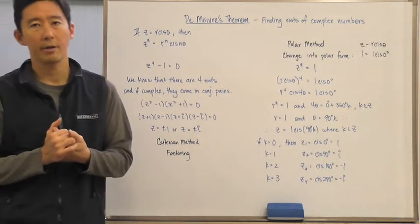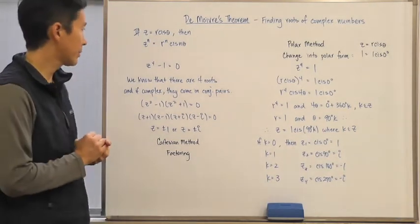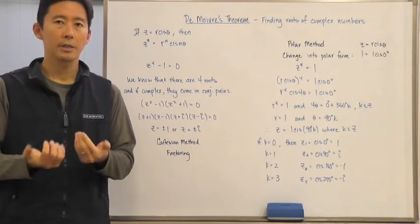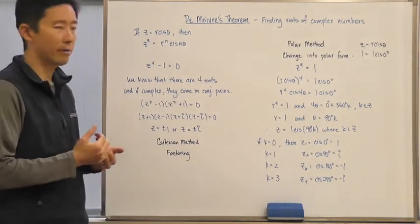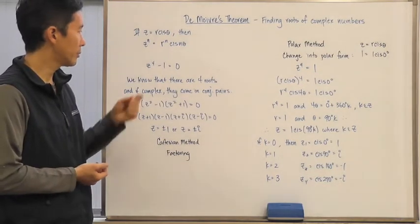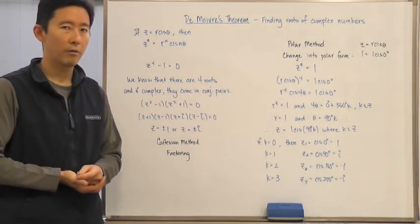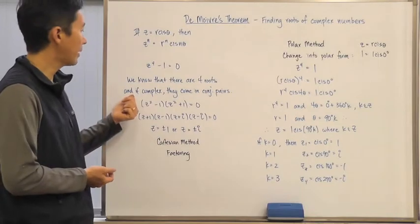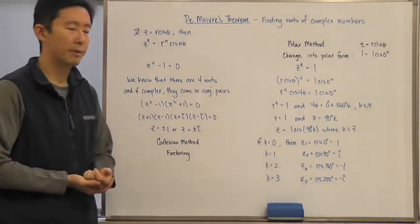Now, if we were to find all of the roots or the zeros of this particular equation, we need to know exactly how many there are first. And let's just think about that. We know that there are four roots because this is a degree four polynomial. And if any roots are complex, of course, they come in conjugate pairs.